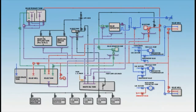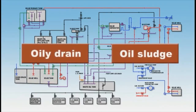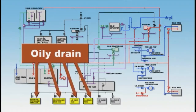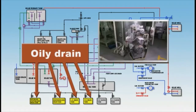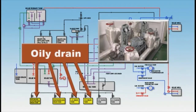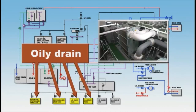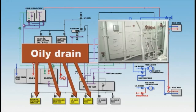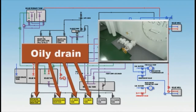In addition to oily bilge water, we also have oily drain and oil sludge. Oily drain refers to drain resulting from the leakage of fuel oil and lubricating oil from the engine room, as well as oil leakage from equipment that uses oil. Specifically, oily drain is leakage of oil into pieces of equipment such as diesel engines, burners, pumps, heaters, coolers, filters, oil tanks, and the deep combing found under the oil tank.